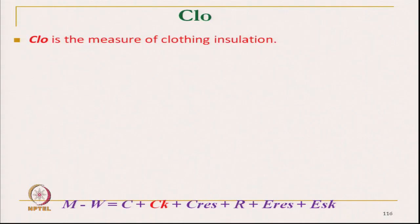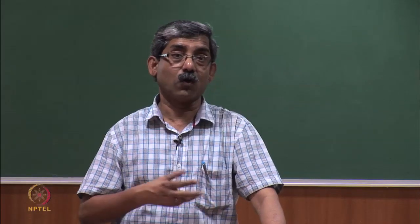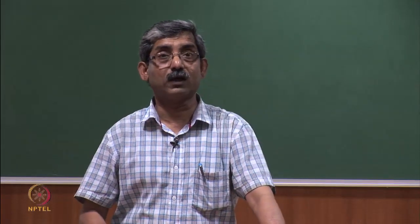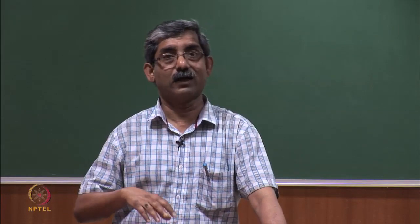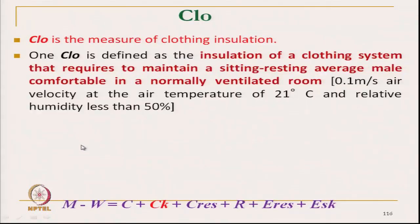Clo is the thermal insulation of an overall clothing system — not just one garment, but the totality of clothing including tops, bottoms, innerwear, socks, and gloves. One clo is defined as the insulation of the clothing system required to maintain a sitting, resting average male comfortably in a normally ventilated room — with air velocity of 0.1 m/s, temperature around 21°C, and relative humidity less than 50%.